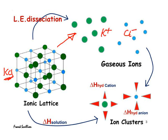We can then consider adding those ions to water. If we add a mole of potassium and a mole of chloride ions to water, we get the enthalpy of hydration of the potassium ions and the enthalpy of hydration of the chloride ions, producing these ion clusters. This particular step will be exothermic, producing lots of attractions between the ions and the water dipoles.